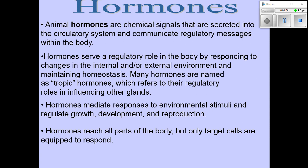The endocrine system is sometimes called the hormonal system because it involves the release of hormones into the blood. For Biology 30, there are in fact plant hormones as well, but here we are going to focus on the animal hormones and in particular mammalian — and even more specifically — the human hormones. They are released directly into the blood, the circulatory system, for communication in terms of maintaining homeostasis throughout the body.